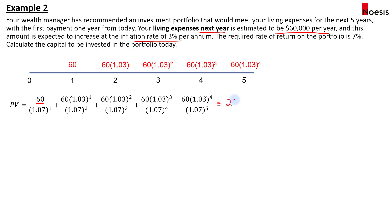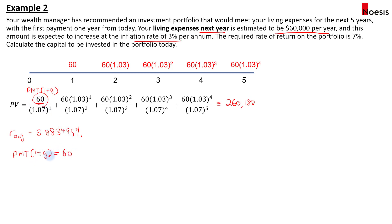In this case, the total present value works out to $260,180. The adjusted rate of 3.883495% is still applicable. The only question is how to handle the initial year-1 cash flow. Since the formula assumes PMT×(1+G) is the first term, we work backwards: PMT = 60,000 / 1.03, which equals approximately 58.252427.